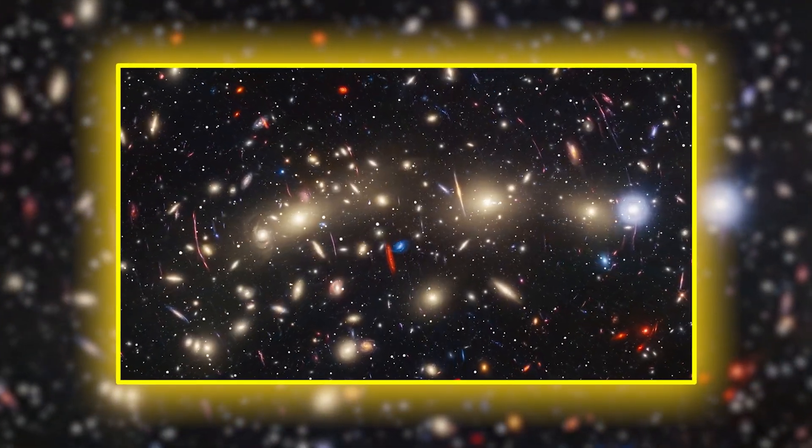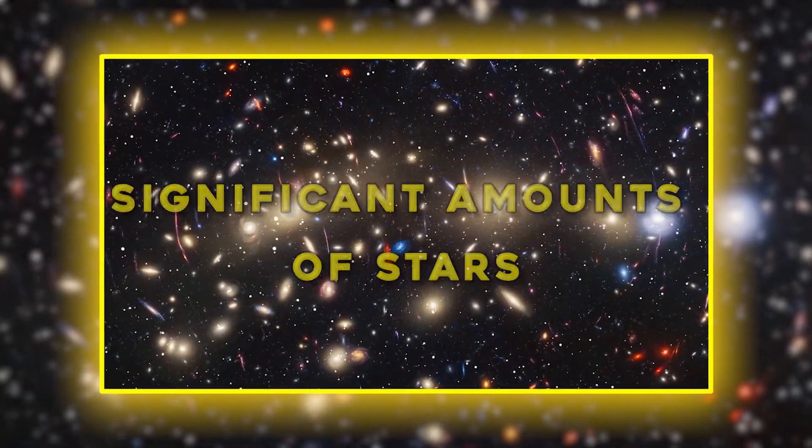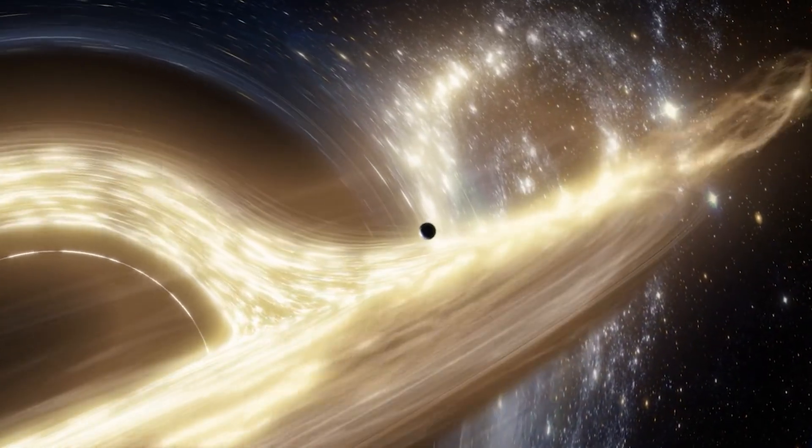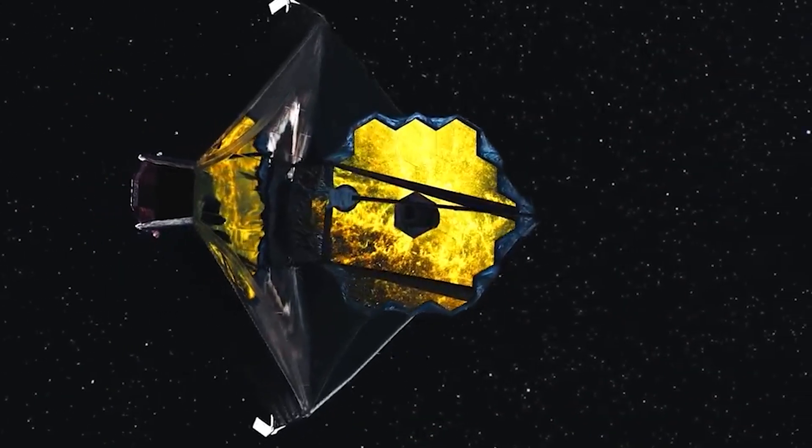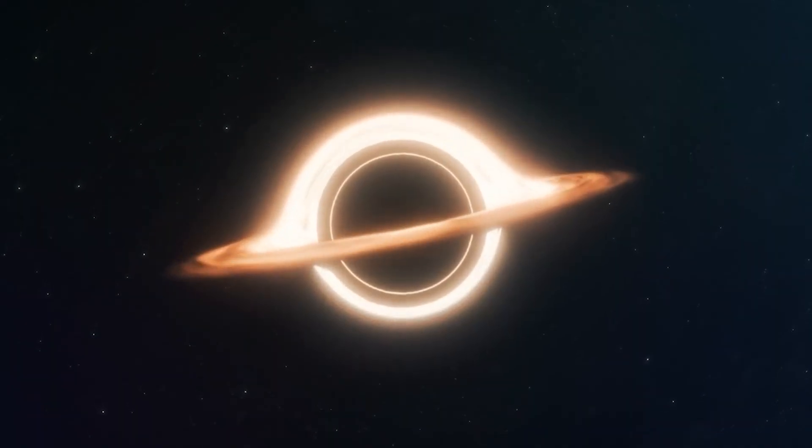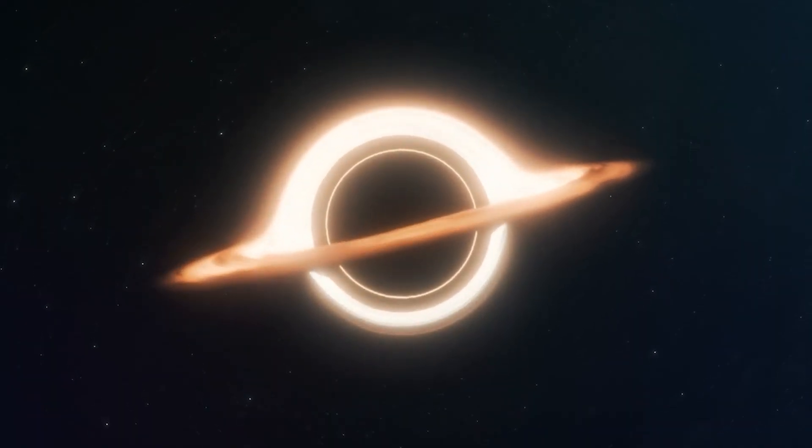Some of these galaxies show signs of already having formed significant amounts of stars, dust, and even early black hole activity. The radiation signatures suggest intense, fast bursts of star formation, phenomena previously believed to occur only hundreds of millions of years later.